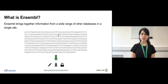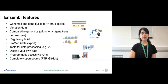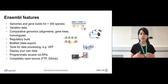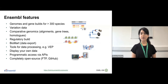Ensembl is also called an added value resource, which means it brings together information from a wide range of other databases and makes it available in a single site. Genomes and gene builds are the primary data type in Ensembl, and we have more than 300 species available. We also have variation data, comparative genomics data — including whole genome alignments, gene trees, orthologues and paralogues — and regulatory builds showing where in the genome you can find regulatory elements such as promoters and enhancers. We also allow data exports.